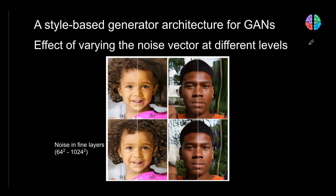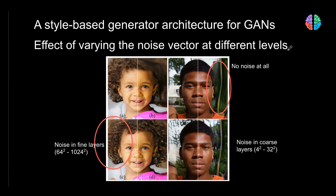Another result examines adding noise at different levels of the network. Adding noise at fine levels produces subtle changes in the image. Adding noise at coarser levels produces larger structural changes. When no noise is added at all, the generated image becomes very blurry without any prominent features. They also compare adding noise to coarser levels versus the final layers of the network.